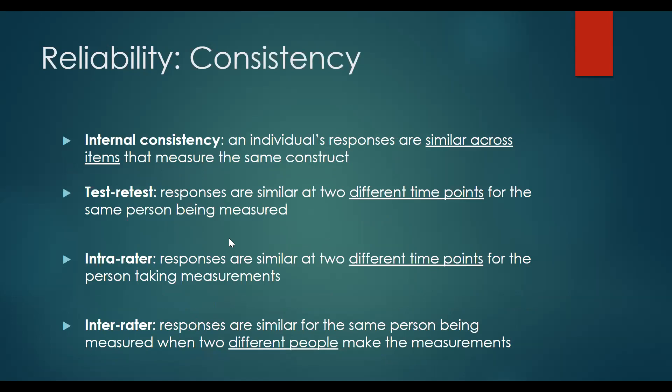Reliability gets at consistency or repeatability. If you deliver the same measure to the same people at different time points, you would expect to get the same answer. There are different ways to measure this. The first is internal consistency — if I have a long scale, maybe 12 or 15 questions to measure a particular construct like smoking behavior or quality of life, we'd expect certain items across those measures to line up with each other. Responses to items that get at similar concepts should be similar.